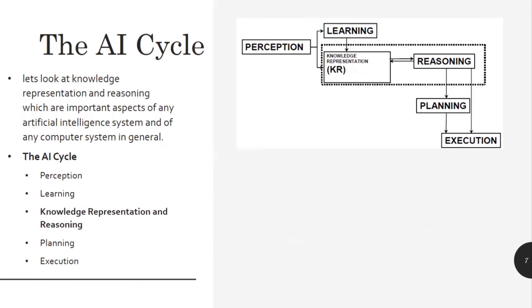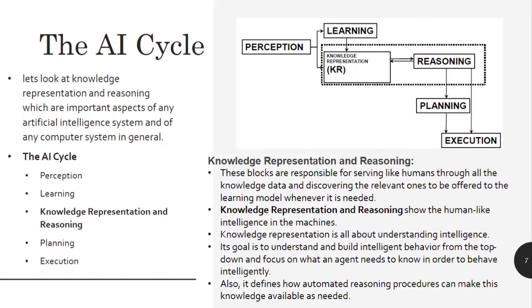After the learning, knowledge representation and reasoning works. These blocks are responsible for serving like humans through all the knowledge data and discovering the relevant ones to offer to the learn model whenever it is needed. Knowledge representation and reasoning show the human-like intelligence in the machines. Knowledge representation is all about understanding intelligence. Its goal is to understand and build intelligent behavior from the top down and focus on what an agent needs to know in order to behave intelligently. It also defines how automated reasoning procedures can make this knowledge available as needed.